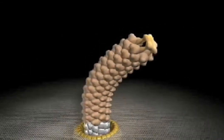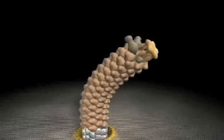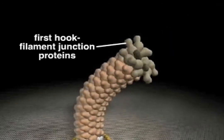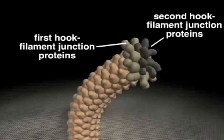After the hook is assembled, the hook cap dissociates and a series of junction proteins assemble between the hook and future filaments.